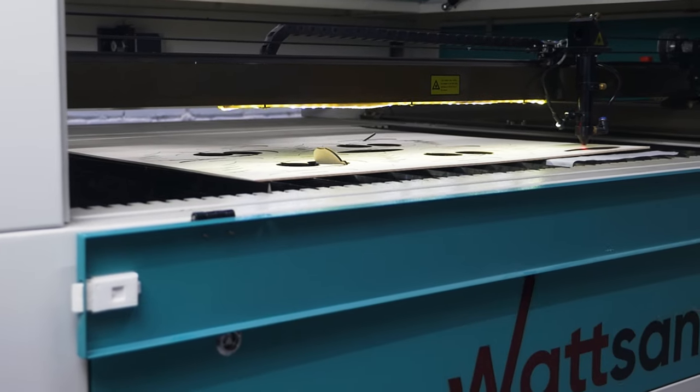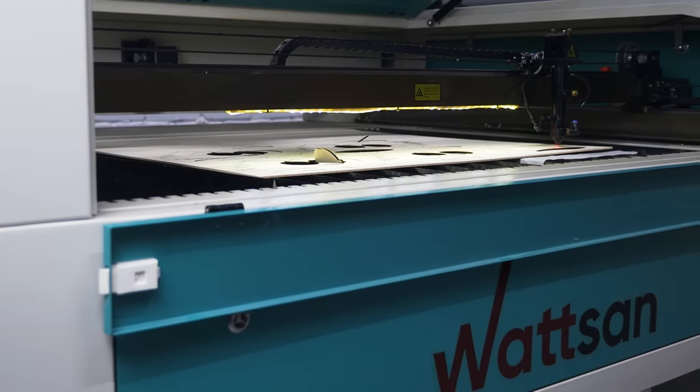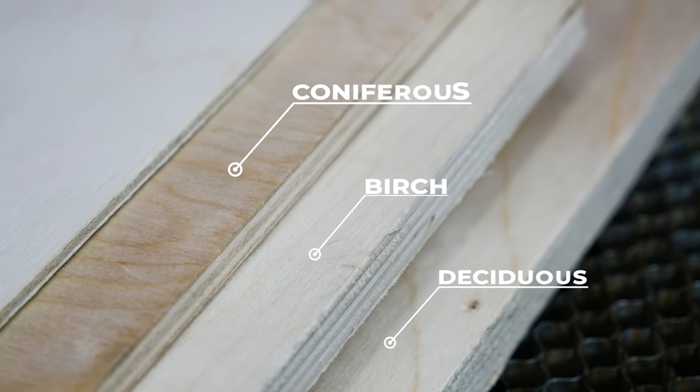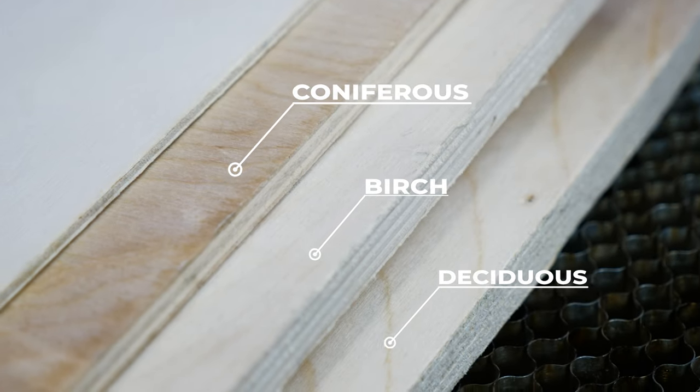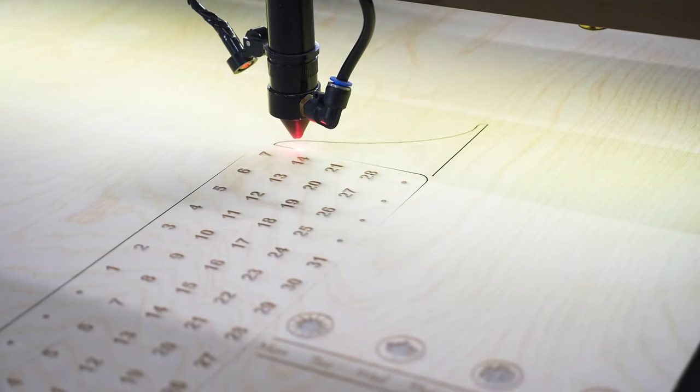Another important point is the type of wood veneer. There are three types: coniferous, deciduous and birch. The most suitable veneer for machining is birch.